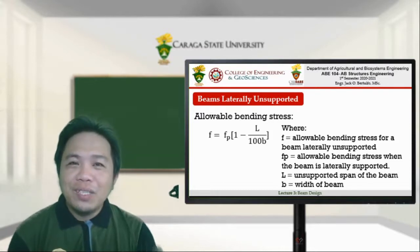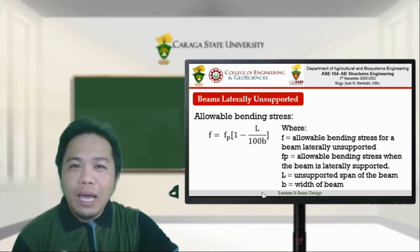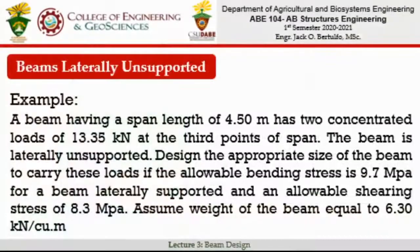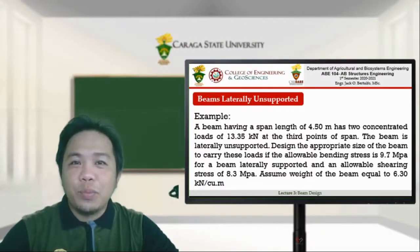To understand the principle, I will present an example showing how to solve this type of problem. A beam having a span length of 4.5 meters has two concentrated loads of 13.35 kilonewtons at the third points of the span. The beam is stated to be laterally unsupported.